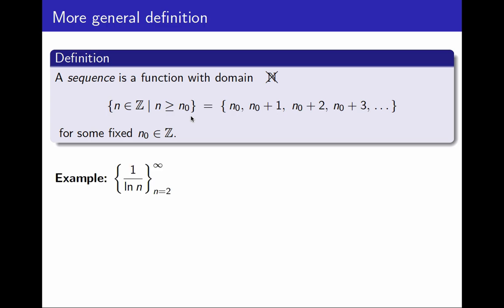For example, the sequence 1 over ln n, where n is the variable, is naturally defined with domain starting at 2, because I cannot divide by ln 1, since that would be 0.